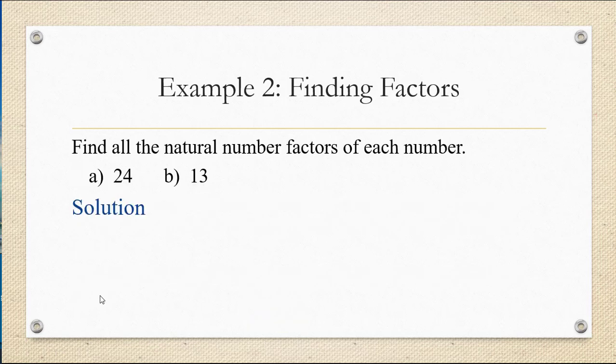You might also be asked to find all the natural number factors of each number, in other words all the numbers that divide evenly into the number. So for example for part a we have the number 24. I find it easiest to find all the factors starting with the number 1 and thinking of what it multiplies by to give me 24. So for example 1 times 24 is 24. Now usually we like to list all the factors in numerical order. So what I do is I have 1 at the beginning and then I put the number 24 a distance away to make it at the end of my list. And then I go up to the number 2. Does 2 go into 24? Yes. 2 times 12 is 24. So both 2 and 12 are factors of 24.